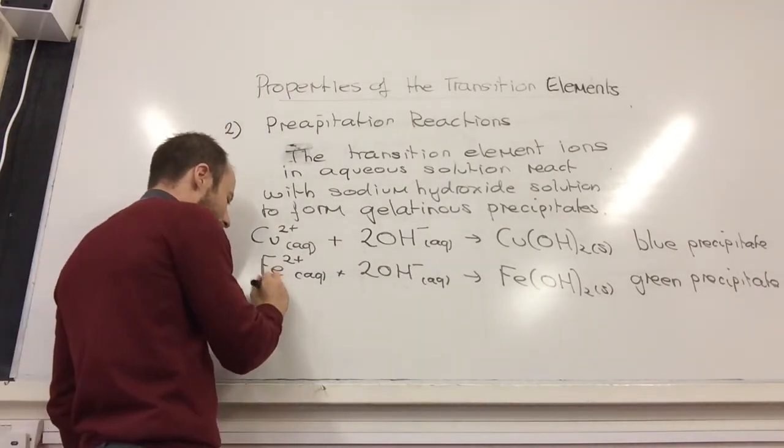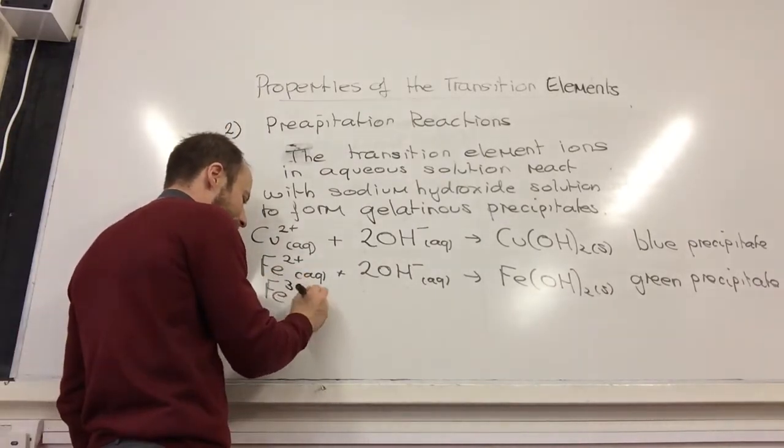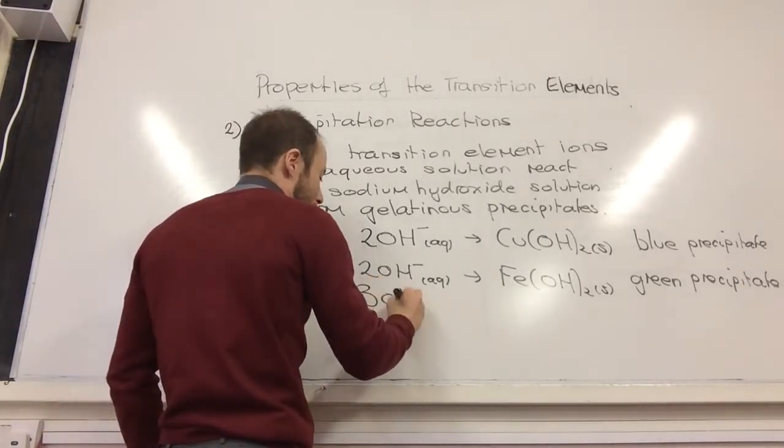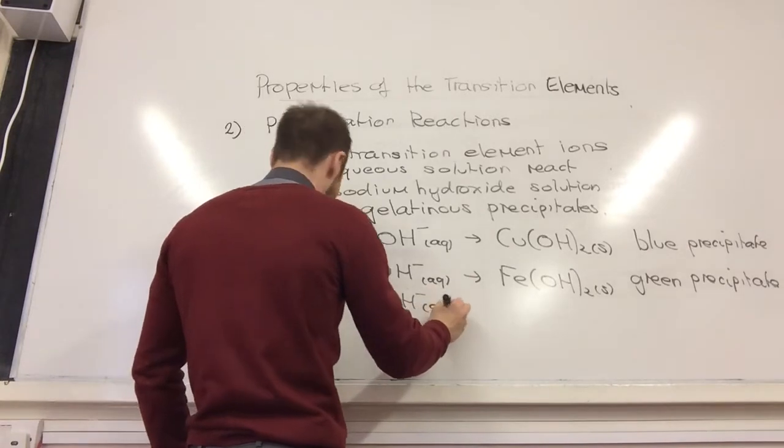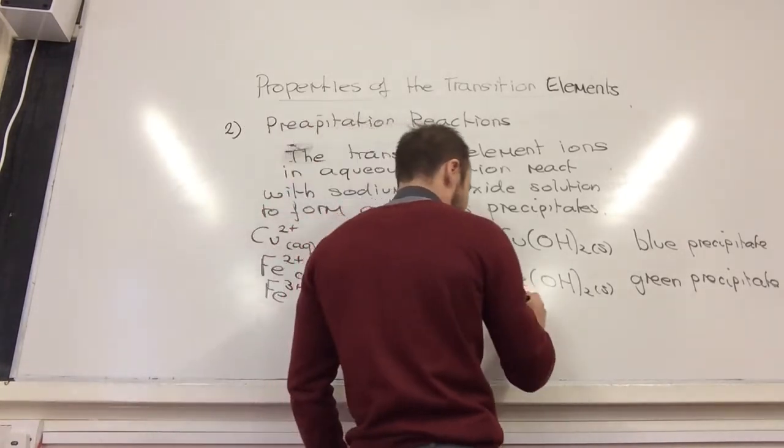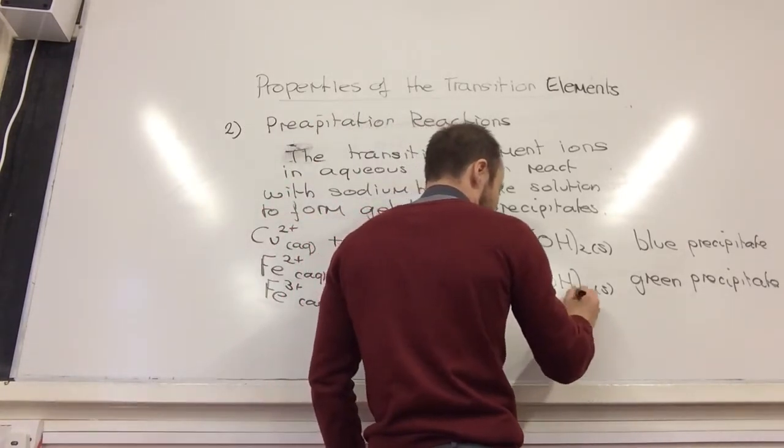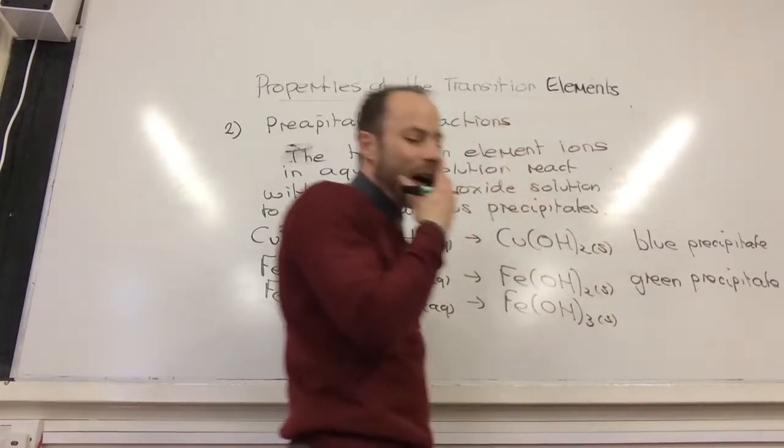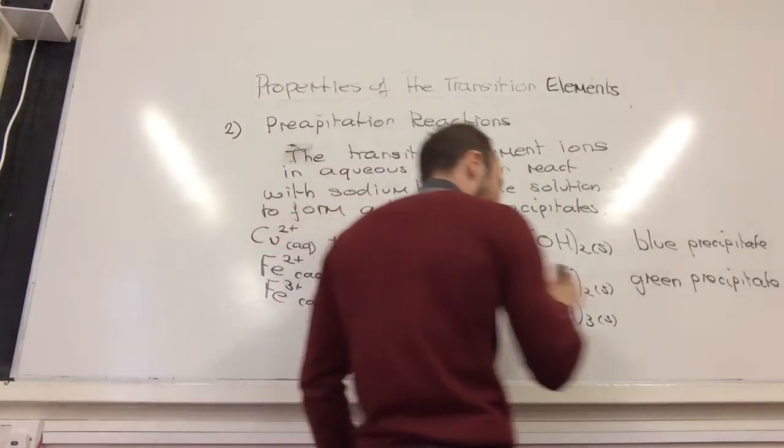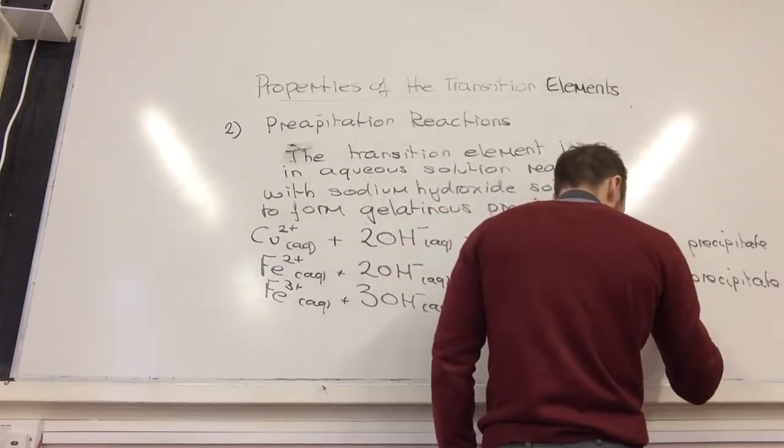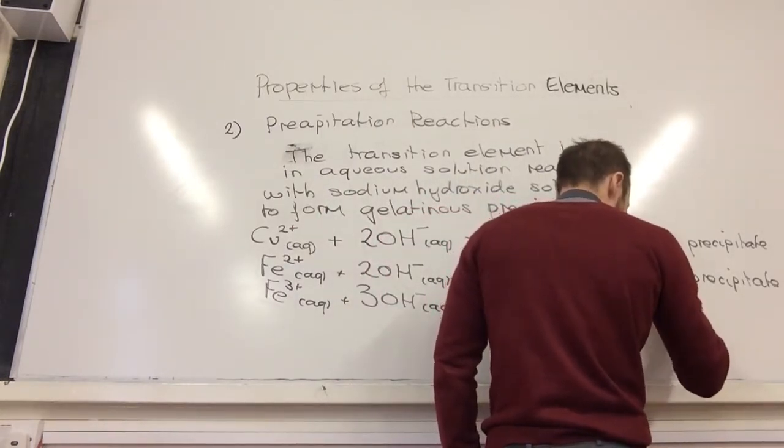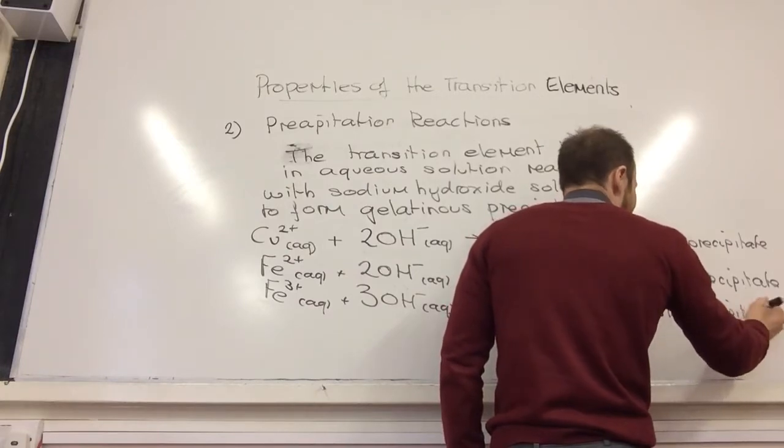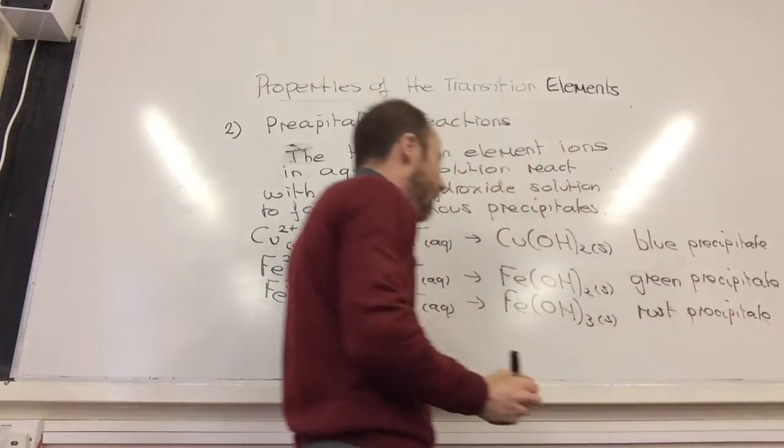We've also got Fe3+ aqueous. Now we're going to add three hydroxide ions because it's three plus to give me Fe(OH)3. That is like a rusty color. It's like red and brown. Yeah, that's right.